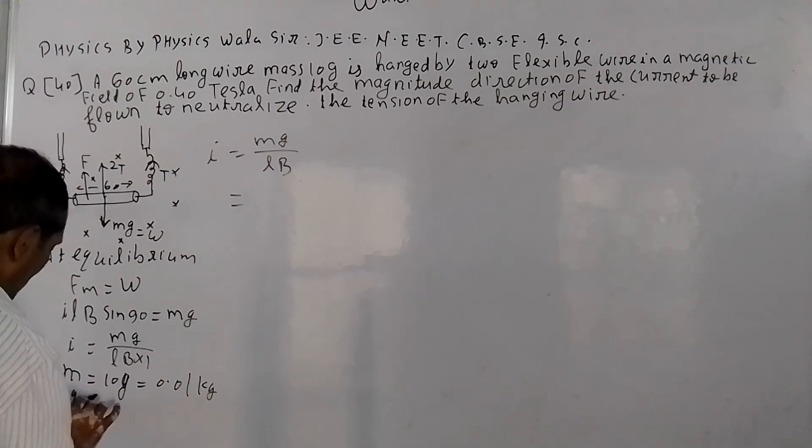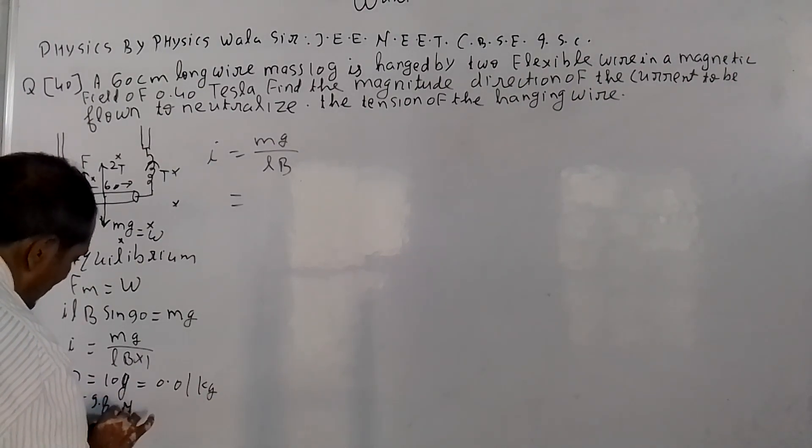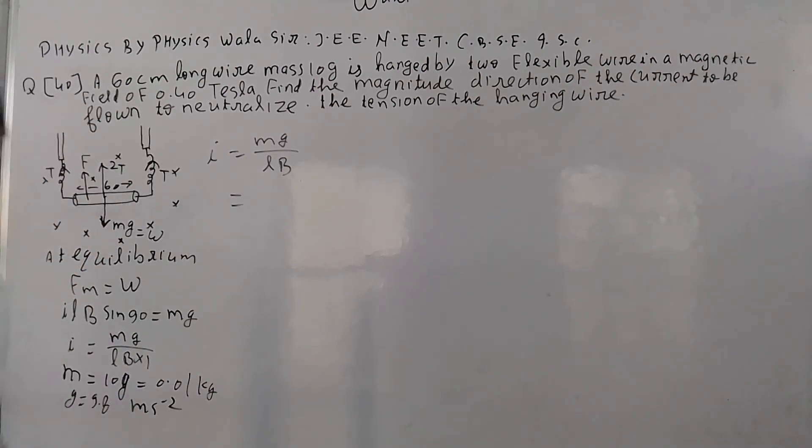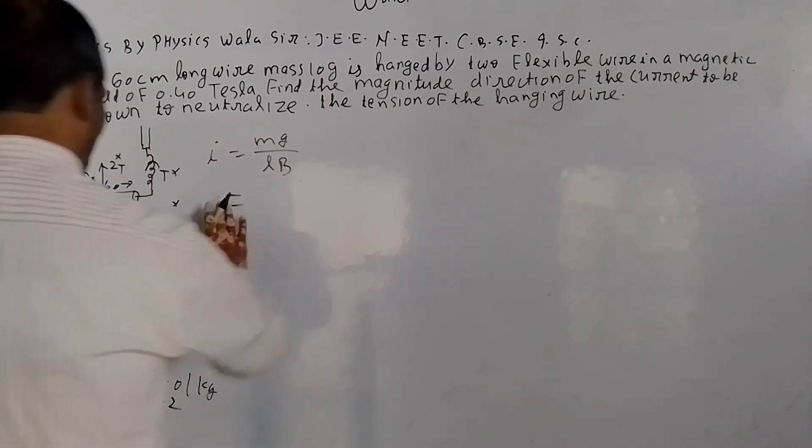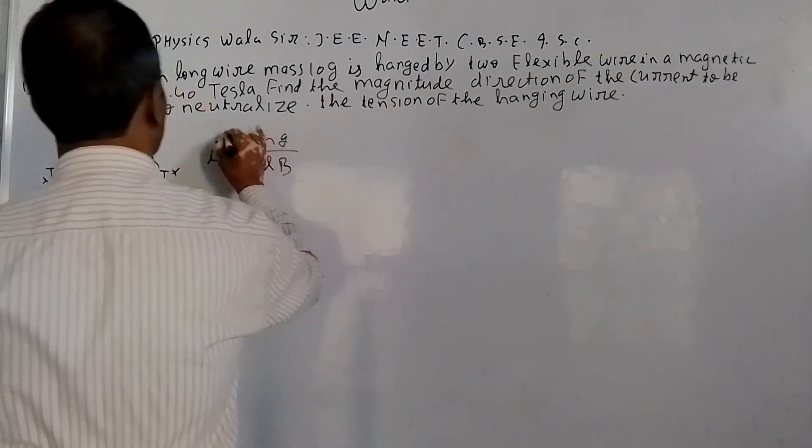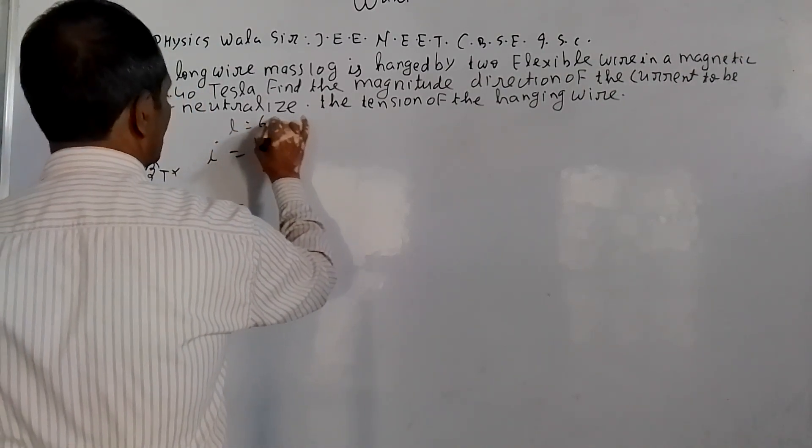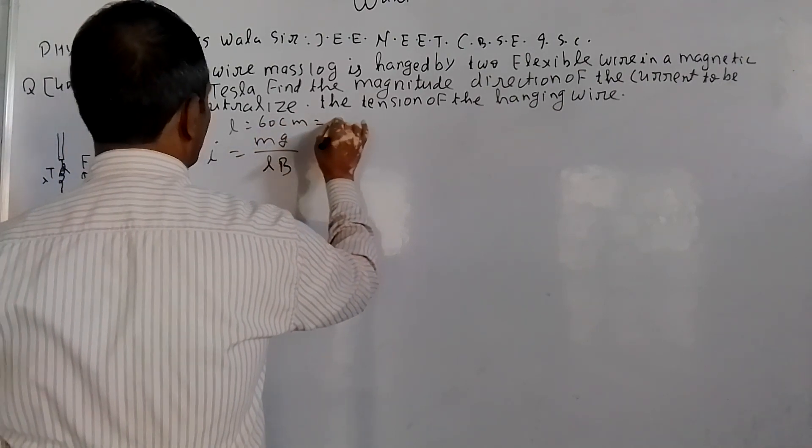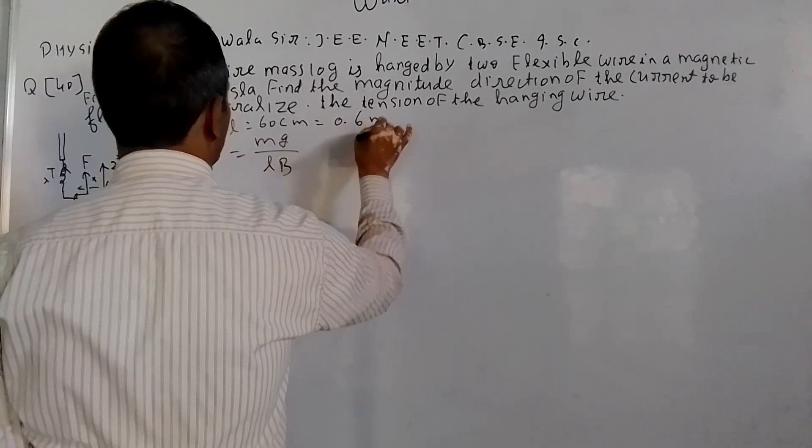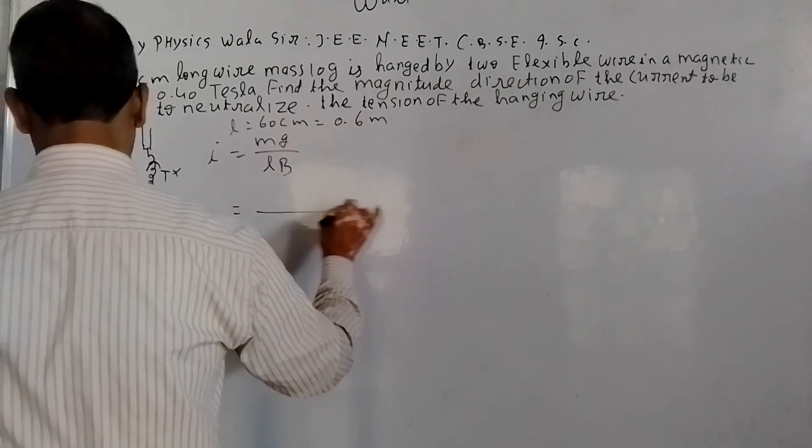G value is 9.8 meter per second squared. The A value, how much is it? The length value is 60 cm, which is 0.6 meters.